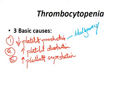Number two is increased platelet destruction — peripheral destruction associated with increased megakaryocytes in the bone marrow. Examples include Bernard-Soulier syndrome, DIC, drug-induced thrombocytopenia with heparin, penicillin, quinidine, or methyldopa. Other examples we'll talk about later: hemolytic uremic syndrome, TTP — thrombotic thrombocytopenic purpura — and ITP.